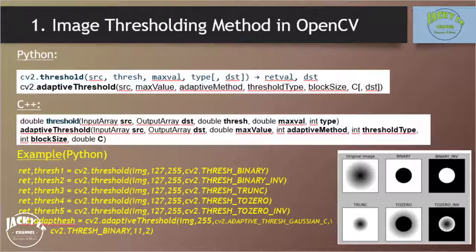In adaptive thresholding, the algorithm calculates the threshold for small regions of the image. So we get different thresholds for different regions of the same image, and it gives us better results for images with varying illumination.